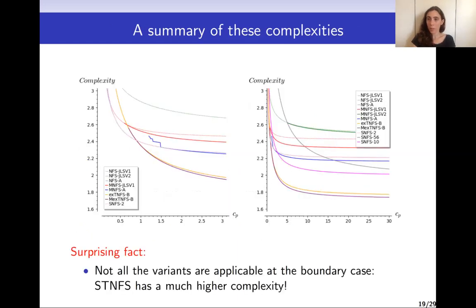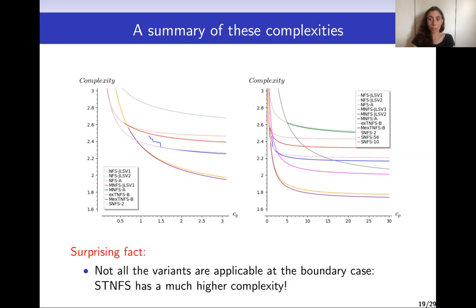In this work, we looked at the complexity of all these algorithms along with all their variants, both for the algorithms and the polynomial selection. This resulted in two plots showing the complexities as a function of CP — the second constant in the L notation — for all variants and polynomial selections. A surprising fact we noticed is that not all variants are applicable at the boundary case. For example, if we want to use the Special Number Field Sieve with the tower setup, this results in norms that are much larger than expected and thus a much higher complexity. So some variants cannot be combined precisely in this boundary case.